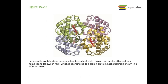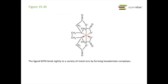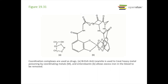Hemoglobin has four protein subunits, each with an iron center attached to the heme ligand — shown as the little red dots — which is coordinated to a globin protein. EDTA forms hexadentate complexes and is used as a preservative in many foods, and also in analytical chemistry for titrations. British anti-lewisite (BAL) is used to treat heavy metal poisoning by forming a complex with heavy metals that can pass safely through the body. Enterobactin forms iron complexes for patients with blood diseases leading to iron buildup, bonding with the iron so it can be eliminated from the body.